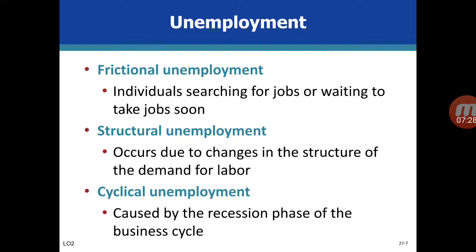There are three different types of unemployment. The first is frictional unemployment, which refers to when people are moving between jobs — leaving one job and moving to another. The time period when they stay unemployed between jobs is called frictional unemployment. This is short-lived and a necessary part of the economy, as people have to move from one job to another and stay unemployed for a while.